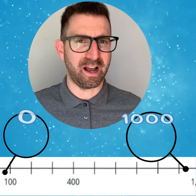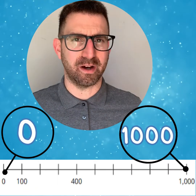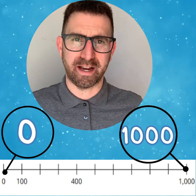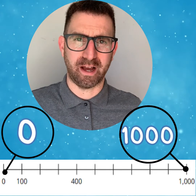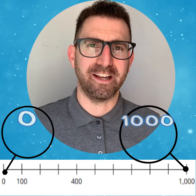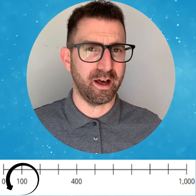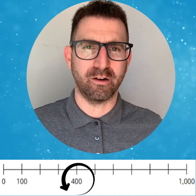Here we have another number line. Again, make sure you look at the start and end number. In this case, it starts with zero and ends with 1000. Again, there are two extra clues given: 100 on the first interval and 400 on the fourth interval.